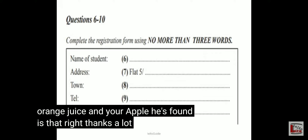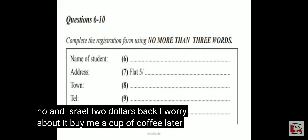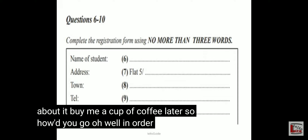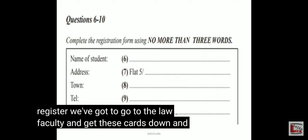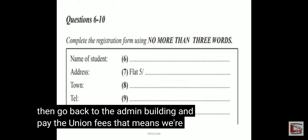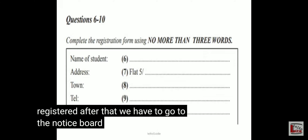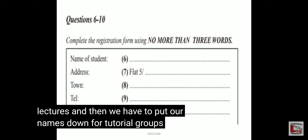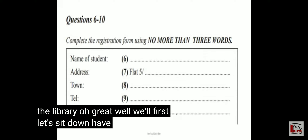Great, thanks a lot. And here's your $2 back. Don't worry about it — buy me a cup of coffee later. All right then. So how'd you go? Well, in order to register, we've got to go to the law faculty and get this card stamped, and then go back to the admin building and pay the union fees. That means we're registered. After that, we have to go to the notice board to find out about lectures, and then put our names down for tutorial groups and go to the library. Well, first let's sit down and have our lunch.